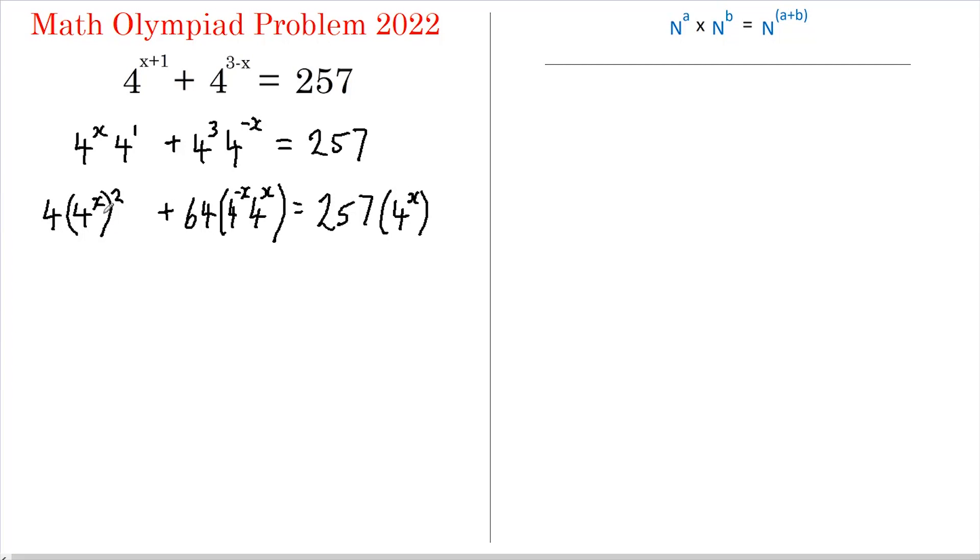We've got a few 4 to the power of x's here so just to make things simple I'm going to say let u equal 4 to the power of x. Now substituting this in and rearranging we get 4u squared plus 64, well if we add the powers of x here we get 4 to the power of 0 which is 1 and this equals 257u.